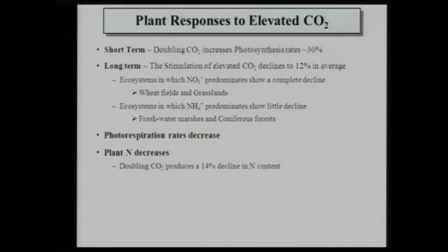Plant responses to elevated CO2: we know that in the short term, if you double CO2 from 360 to 720, you will increase photosynthesis by 30%. However, in the long term, the stimulation of elevated CO2 declines, and the yield increase will be only 12% on average. Ecosystems in which nitrate is the predominant nitrogen source show complete decline — doubling CO2 produces no increase in yield in the long term. This is called photosynthetic acclimation. However, in ecosystems where ammonium is predominant, like conifer ecosystems with acidic soil, we show very little decline. This is from a meta-analysis of many works.